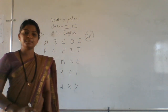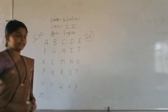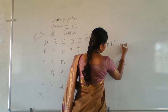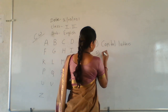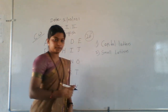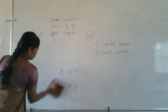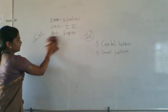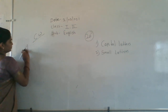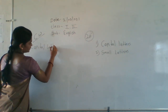There are two types of letters in our English alphabets. The first one is a capital letter and the second one is a small letter. We are going to learn about capital and small letters. First, write down capital letters.